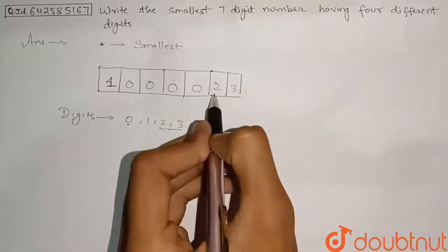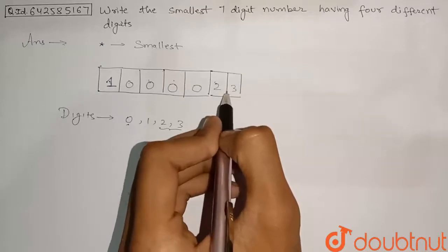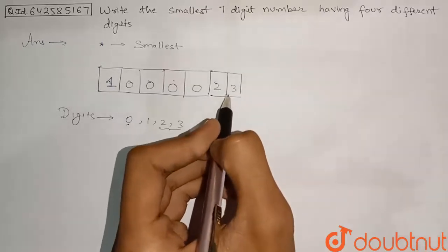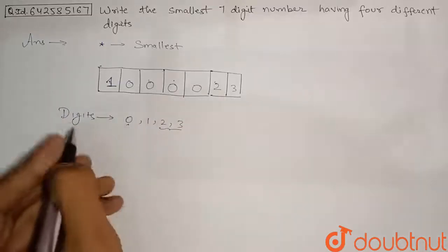Because if we will just put 3 here, so this number will be last 2 digit will be 32, and 23 is smaller and we need to find the smallest number. So here we are putting this.